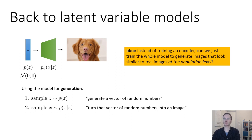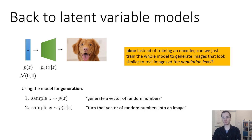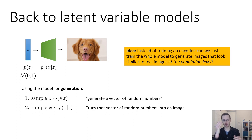The idea we're going to explore in today's lecture is: instead of training an encoder like we did with VAEs, can we just train the whole model to generate images that look similar to real images at the population level? So instead of trying to guess for every real image what its corresponding z is and then using that to supervise our network, what if we just generate a bunch of random images and then alter our network so those random images at the population level resemble the population of realistic images given to us in our training set?